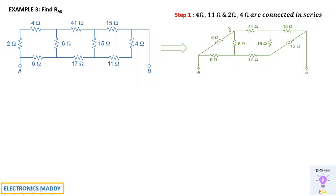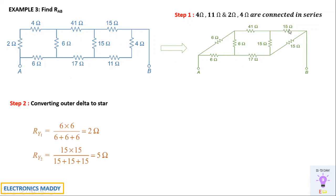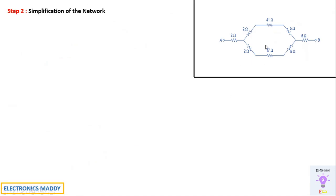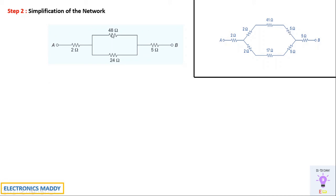After redrawing, we can see two delta networks. Using the shortcut for equal delta resistors: the 6 ohm delta gives 6/3 = 2 ohm star resistors, and the 15 ohm delta gives 15/3 = 5 ohm star resistors. Writing the equivalent network directly this way saves significant time.